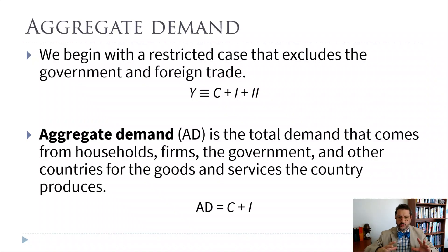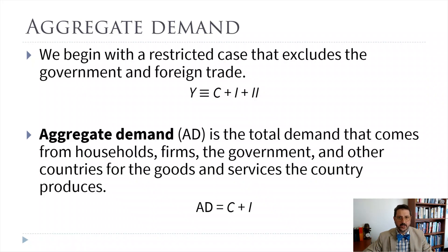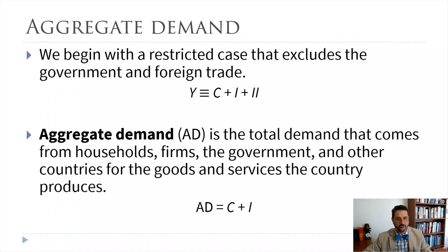By aggregate demand, we mean the total amount that people want to buy in the economy. We're going to make some simplifying assumptions here — we're going to assume that we don't have any government and we don't have any foreign trade. This is just a simplifying assumption; we can add those things back in at the end, but it makes it a little bit easier to understand what's going on in our multiplier model.